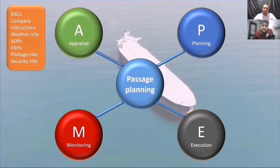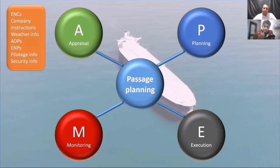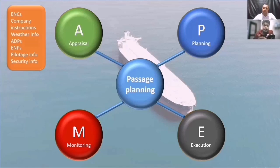You also have the Admiralty Digital Publications — ADPs and ENPs, Electronic Navigation Publications. These are publications like list of lights and list of radio signals — very important. You have to go through these publications to check what is the requirement for that particular port or passage. For example, when going from Singapore to Japan, as you come out of Singapore you have to do VHF reportings for Singapore. As you go up, you have to enter JASREP areas where you have to do Japanese reporting. These reporting requirements keep changing, so in the appraisal phase, remember — you are just collecting and studying all the information to understand what is required. You have not started planning yet.